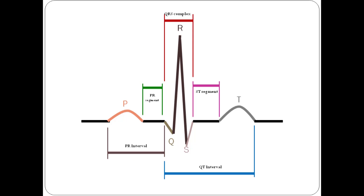In the first diagram, we can see the waves: the P wave, the Q, the R, the S, and lastly the T wave. We can also talk about their segments, which are the PR segment and the ST segment, and two intervals, which are the PR interval and QT interval.